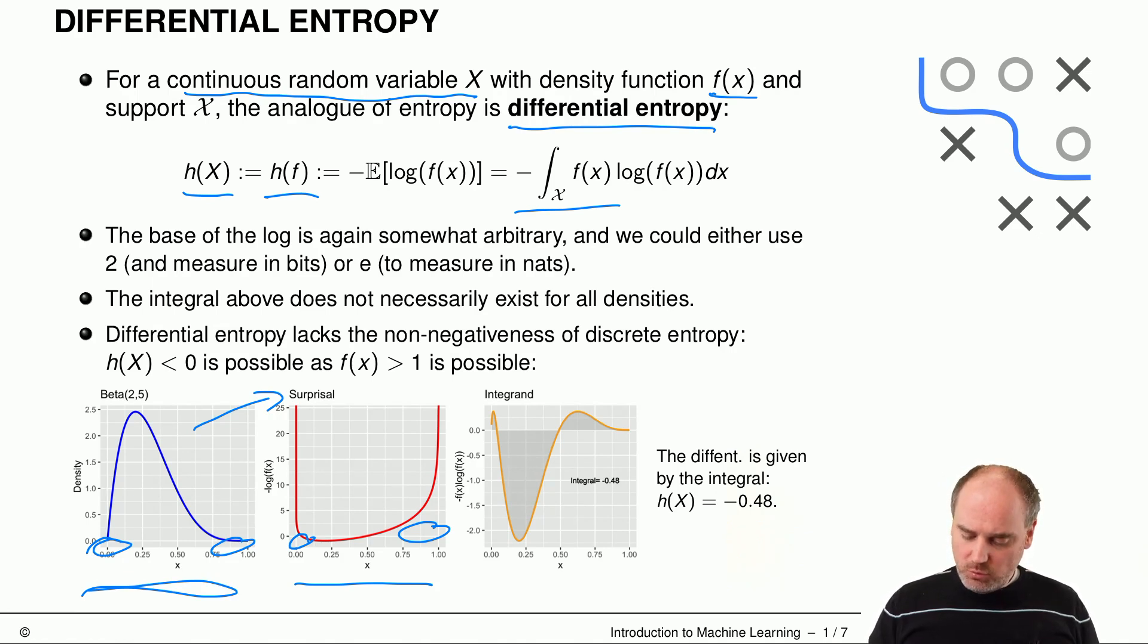And now what we do is we simply multiply these two things here together. So the negative log times the density, which we do exactly here, and then we compute the integral. And for this specific density, you now can see that the differential entropy is actually minus 4.8. So it can become negative. Even for a vanilla looking distribution, it can become negative.